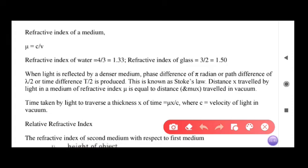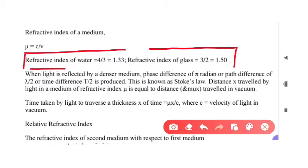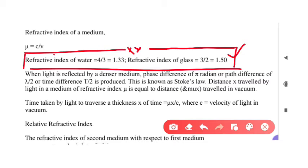Refractive index values to remember: the refractive index of water is 4/3, which is 1.33. The refractive index of glass is 1.50. You should remember both of these because they are generally asked in exams — that is why I have mentioned them in my notes. There are many other refractive index values for different mediums which may also be asked in higher classes.